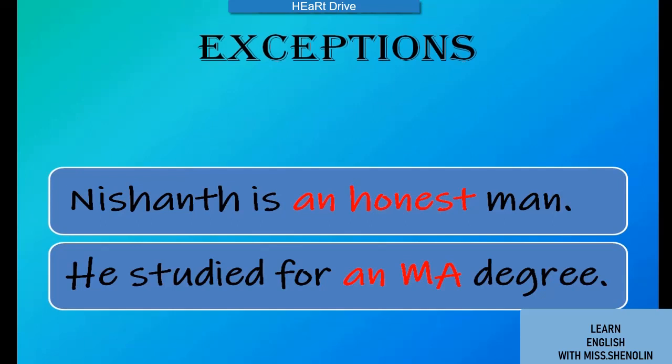Some exceptions are: 'Nishant is an honest man.' The word 'honest' starts with 'h,' but why do we use 'an' before it? Because the word 'honest' gives a vowel sound — 'h' is silent, and 'o' is pronounced as a vowel sound.